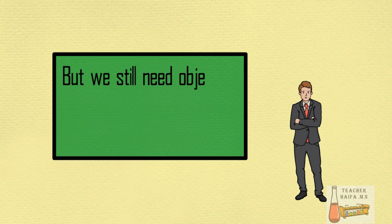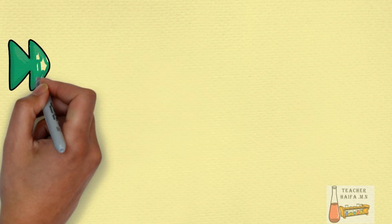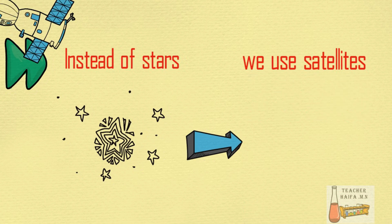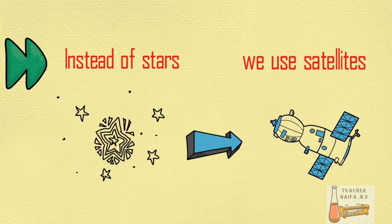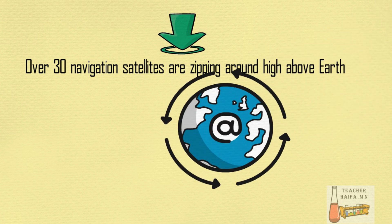But we still need objects high in the sky to figure out where we are. Instead of stars, we use satellites. Over 30 navigation satellites are zipping around high above Earth.